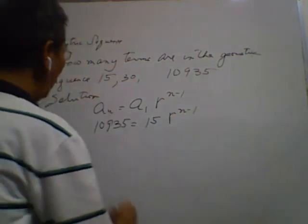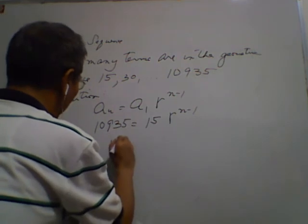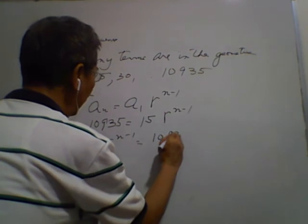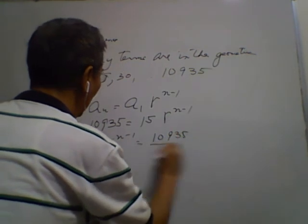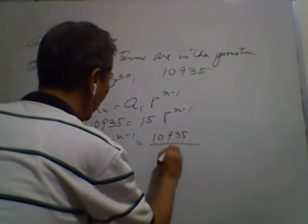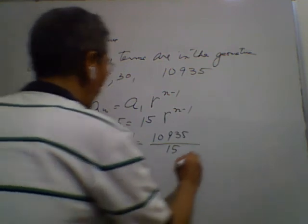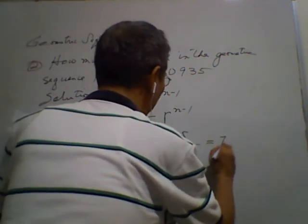So, r to the power of n minus 1 is equal to 10,935 over 15, and that will be equal to 729.